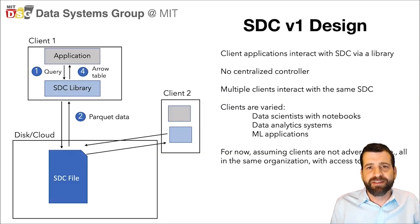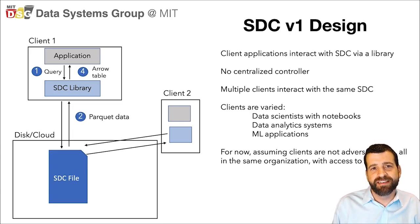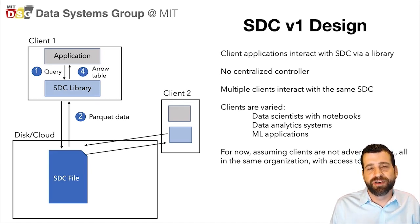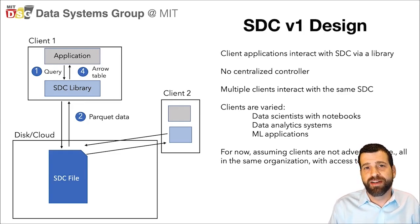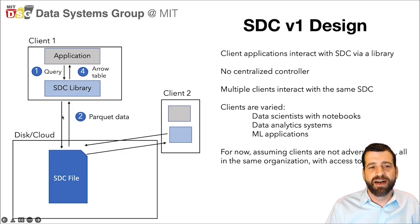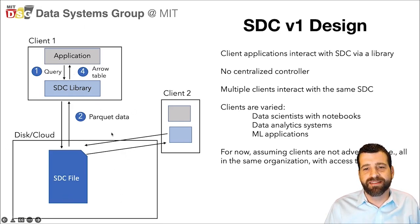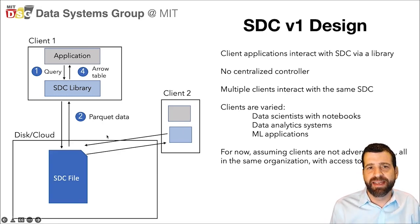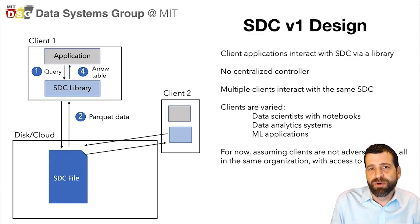Given the idea of advanced physical layouts and that we want clients to participate in the reorganization of data, I'm going to present the initial design we've come up with for SDCs. SDCs are most notably implemented without a centralized server or controller. The code of SDCs is completely implemented inside of a library that is linked into client applications. Clients interact via this library with SDCs as they sit on the cloud or on disk. We imagine these clients are quite varied — they could be data scientists from an IPython notebook, data analytics systems like a new optimized version of Amazon Redshift, or machine learning pipelines that want efficient access to data on disk.